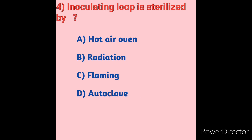Question 4: An inoculating loop is sterilized by — Option A: Hot air oven, Option B: Radiation, Option C: Flaming, Option D: Autoclave. An inoculating loop is sterilized by passing it through the flame of a gas burner until the entire length of the wire becomes orange from the heat, incinerating all contaminants. Once sterilized, never lay the loop down or it may become contaminated again. Option C — flaming — is the correct answer.